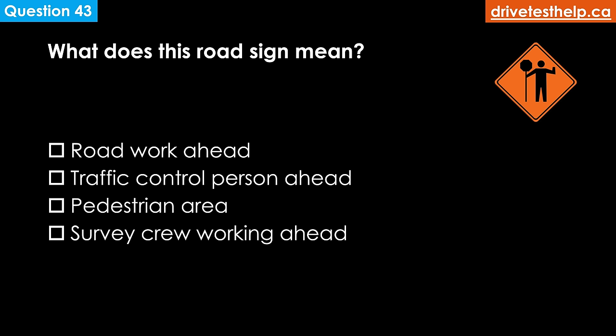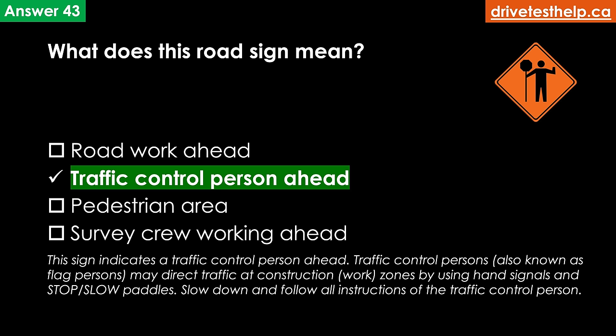What does this road sign mean? Options: road work ahead; traffic control person ahead; pedestrian area; survey crew working ahead. The correct answer is traffic control person ahead. This sign indicates a traffic control person — also known as a flag person — who may direct traffic at construction work zones using hand signals and stop or slow paddles. Slow down and follow all directions of the traffic control person.